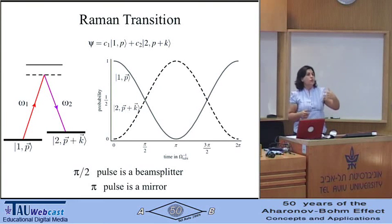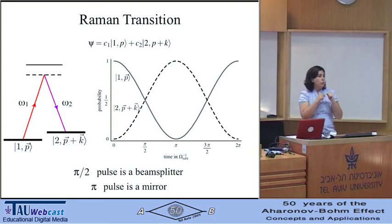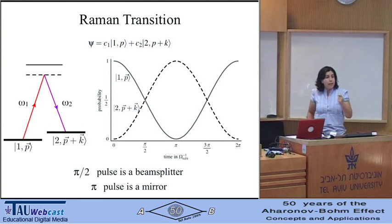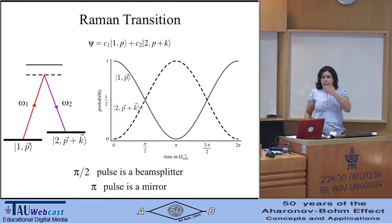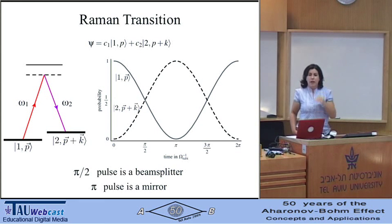If I were to keep the laser running for a long time, the atom would oscillate between the two states — the ground and the excited — with a frequency called the Rabi frequency. Since I can control the duration of the pulse, I can control the state my atom ends up in. If I start from the ground state and apply a pulse lasting pi over 2 in units of the inverse Rabi frequency, I end up in an equal superposition of excited and ground state. A pulse lasting pi causes a transition from ground to excited, or vice versa.